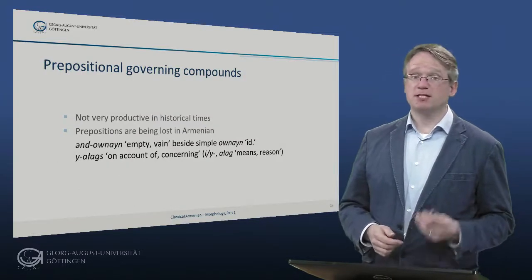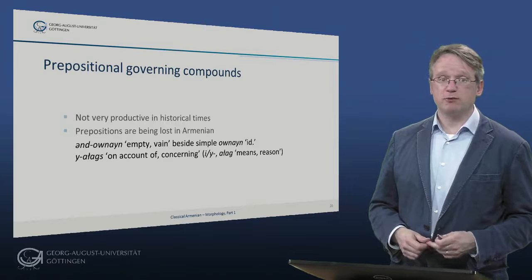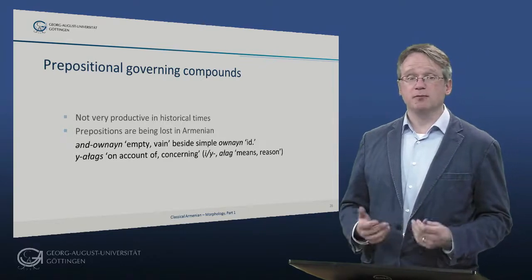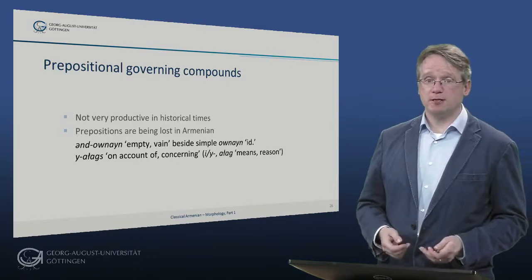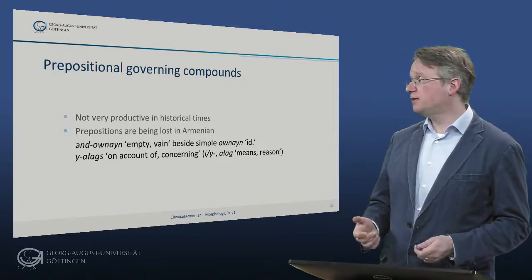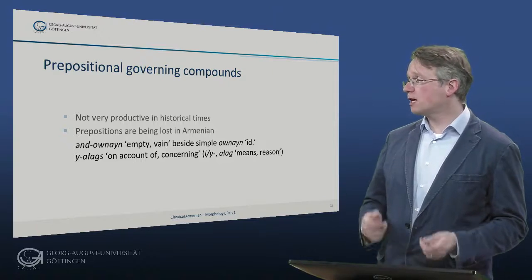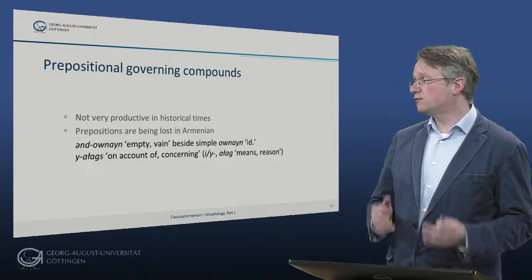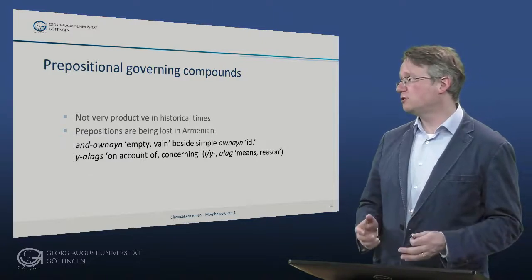Prepositional governing compounds are not very productive in Armenian. As we have already seen, prepositions are lost completely in the modern language. Some instances found in the classical language are indunain – empty, vain – beside the simpler form unain, or jaragis – on account of, concerning – which consists of the preposition e/j and the noun arag meaning means or reason.